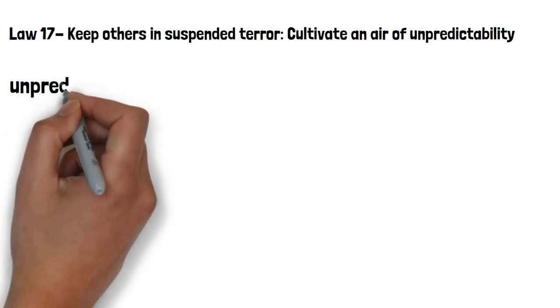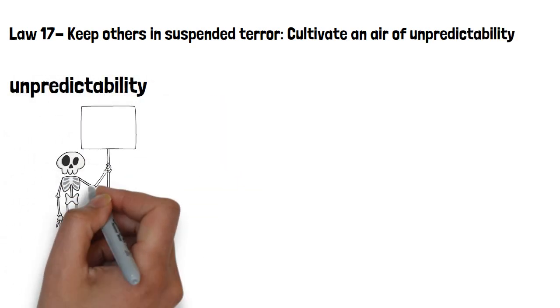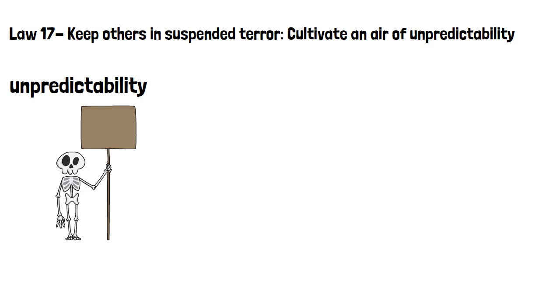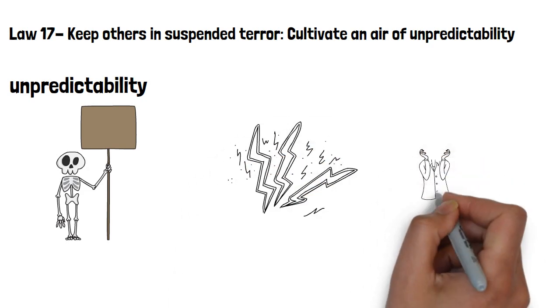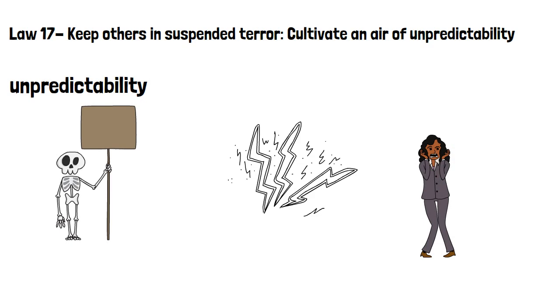Law 17, keep others in suspended terror. Cultivate an air of unpredictability. Too much unpredictability will be seen as a sign of indecisiveness or even of some more serious psychic problem. Patterns are powerful and you can terrify people by disrupting them. Such power should only be used well.